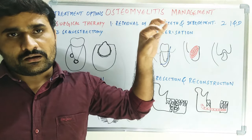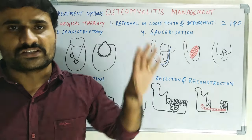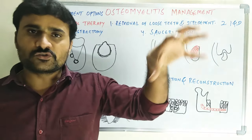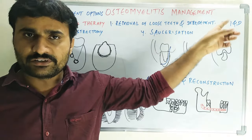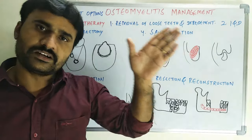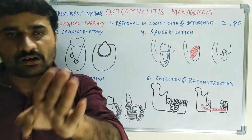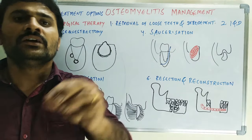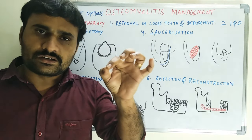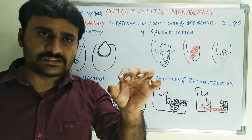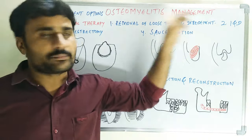In very minimal disease cases, we simply remove the teeth and debride with a combination of hydrogen peroxide and saline. If there are small necrotic particles, they are removed by debridement.